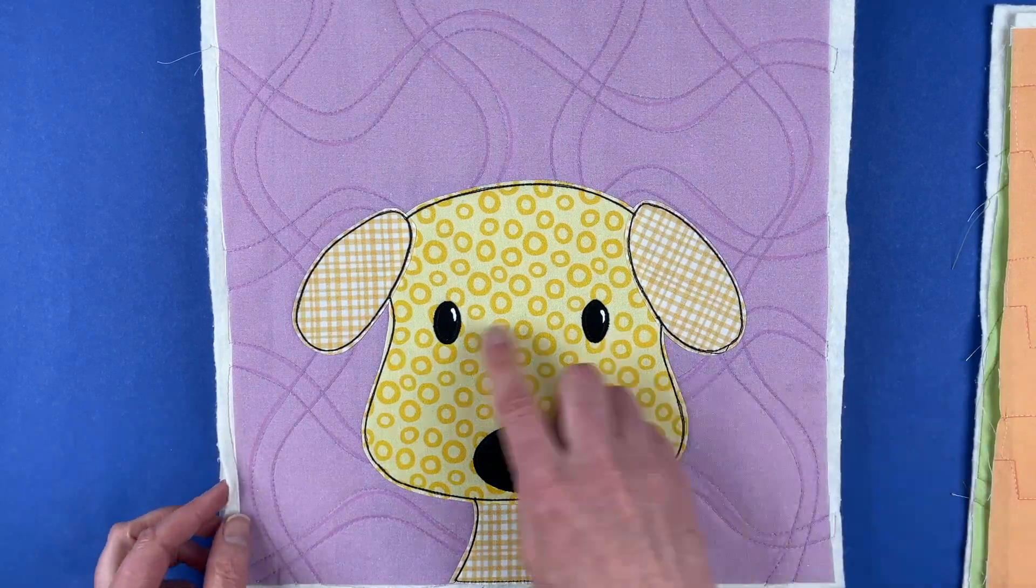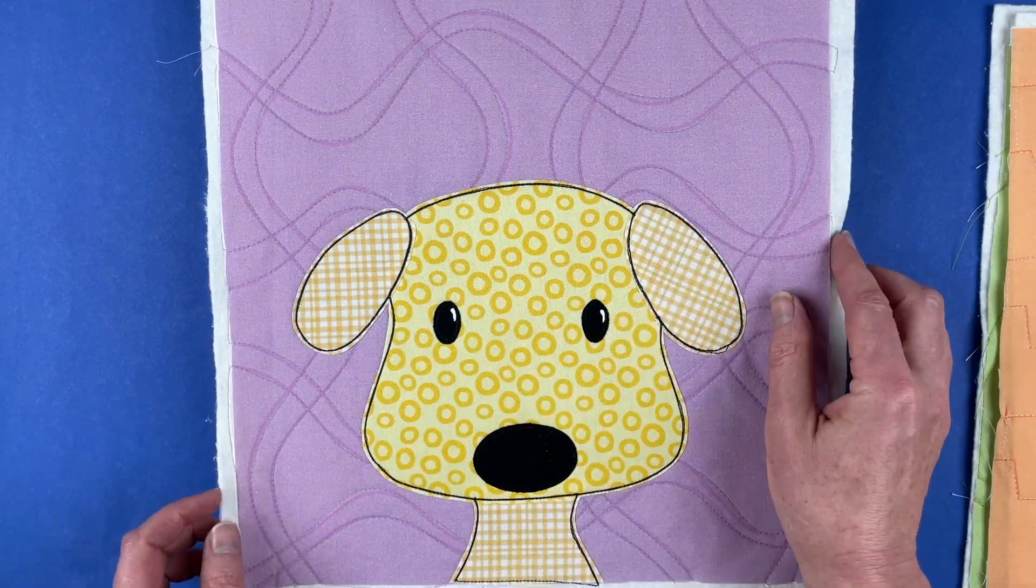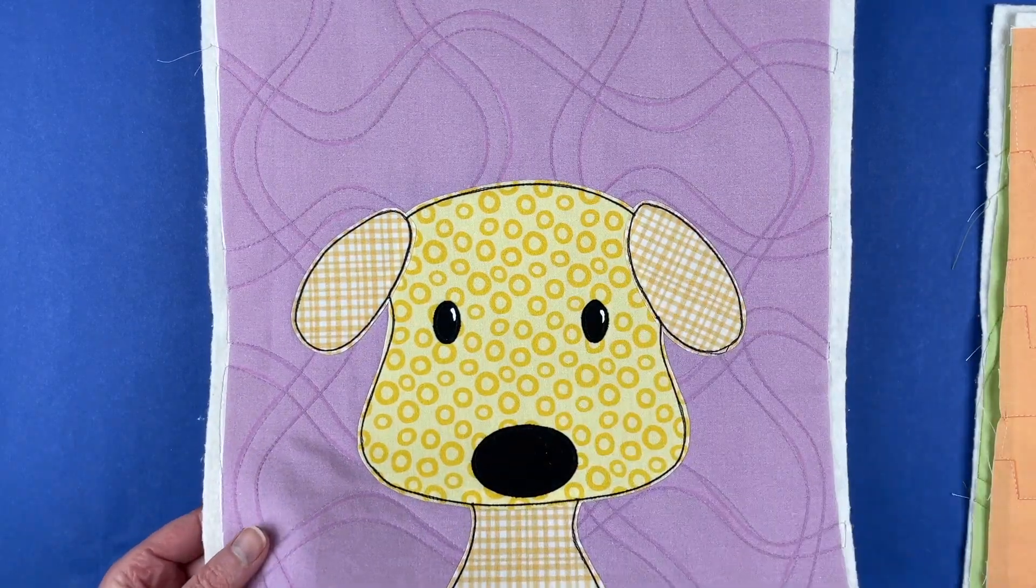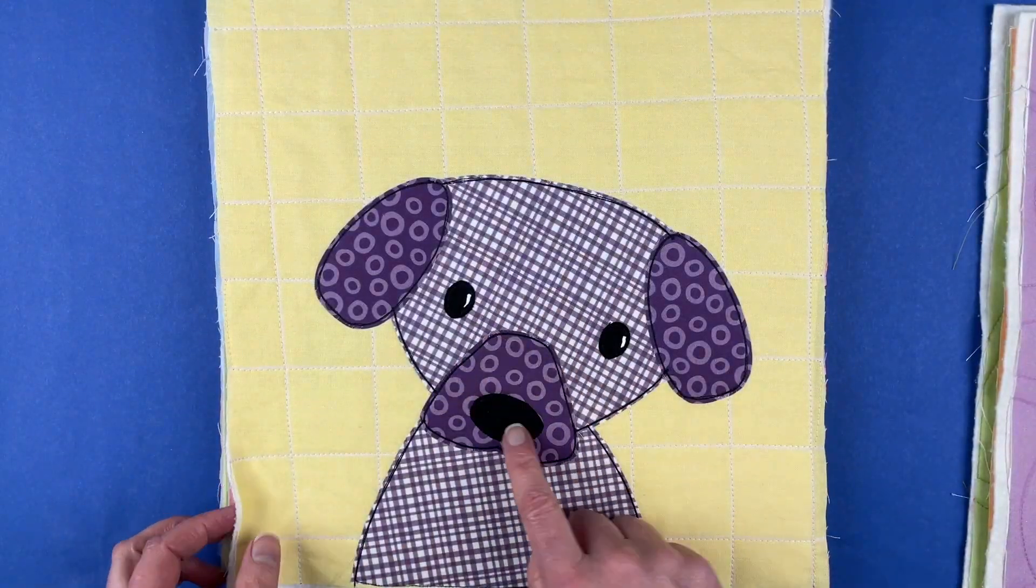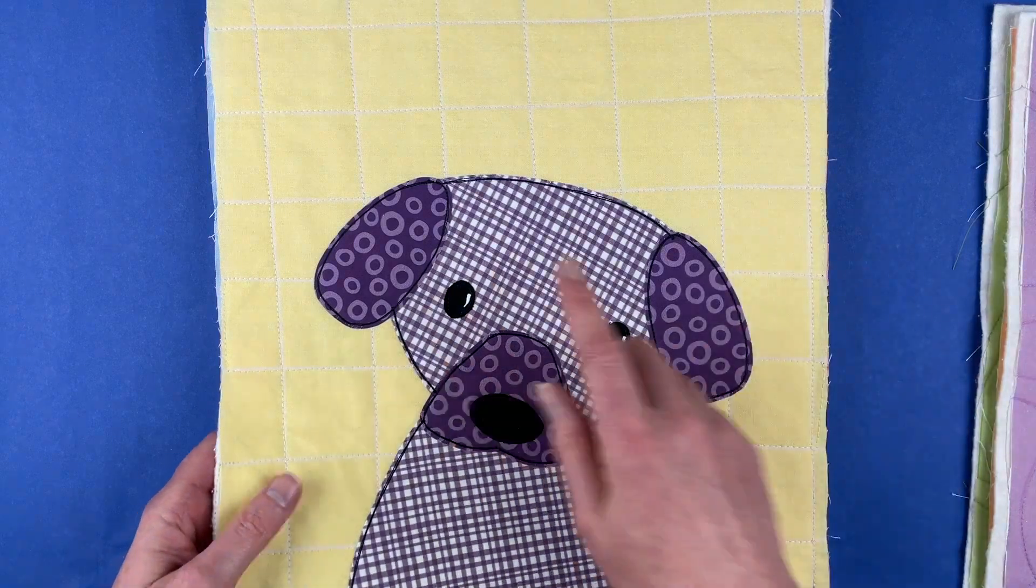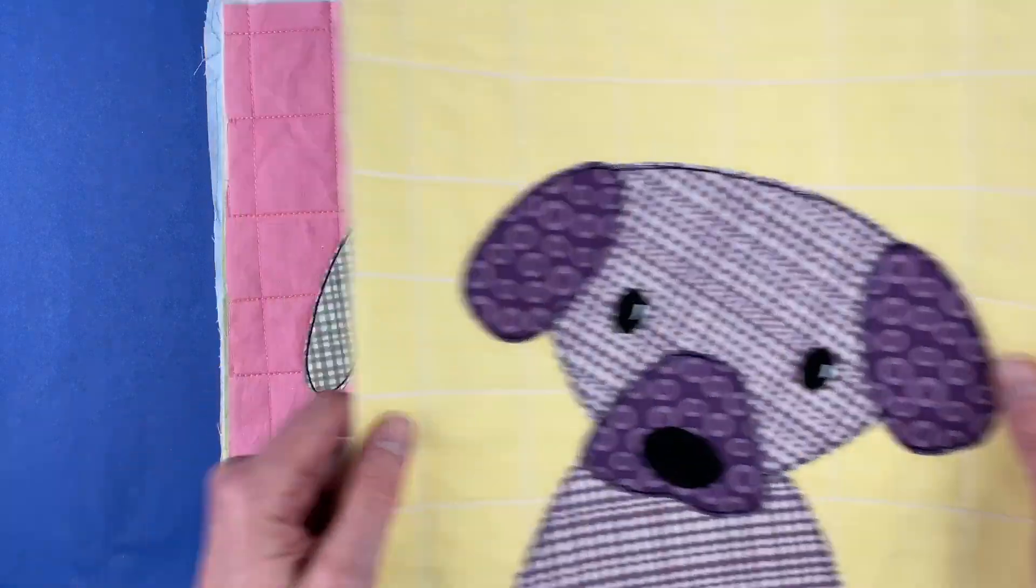So a very simple yellow one. This one doesn't even have a muzzle piece, so this is a really good one to start with when you're just getting started. This one has a simple muzzle, no mouth, so no just trace over the line stitching.